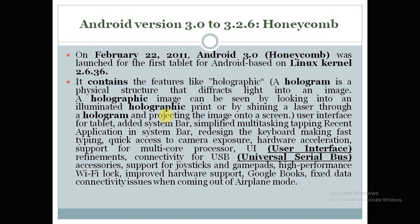Honeycomb also contains a system bar, multi-tasking by tapping recent applications in the system bar, a redesigned keyboard for faster typing, quick access to camera exposure, hardware acceleration, multi-core processor support, and user interface refinements. It also has connectivity for USB — Universal Serial Bus.